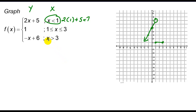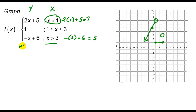When x is greater than 3, I plug 3 into the equation and get a y-value of 3. I move over to 3, go up to 3, and put an open circle because this is strictly greater than. I can't use the y-intercept of 6 because those x values are less than 3. So I use the slope m equals negative 1 and go down 1 to the right 1, down 1 to the right 1, drawing the graph to the right.